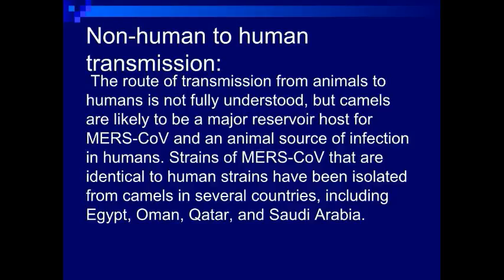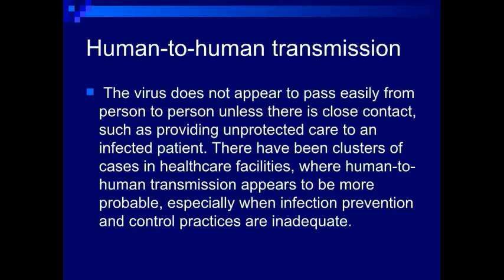Animal-to-human transmission. The route of transmission from animals to humans is not fully understood, but camels are likely to be a major reservoir host for MERS coronavirus and an animal source of infection in humans. Strains of MERS coronavirus identical to human strains have been isolated from camels in several countries including Egypt, Oman, Qatar, and Saudi Arabia. The virus does not appear to pass easily from person to person unless there is close contact, such as providing unprotected care to an infected patient. There have been clusters of cases in health care facilities where human-to-human transmission appears more probable, especially when infection prevention and control practices are inadequate.